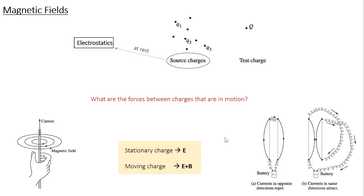I am sure all of you are thorough with the concepts of electrostatics. There we had a collection of charges — either discrete charges or a continuous charge distribution — called a source charge. We are interested in finding the force exerted by these source charges on a test charge Q. The test charge is at a distance R from the source charges and could be either stationary or moving, but importantly the source charge is always at rest. When you have stationary source charges, the only force acting on the test charge is an electrostatic force.